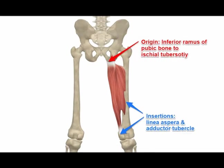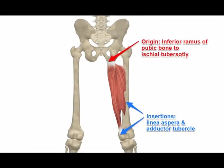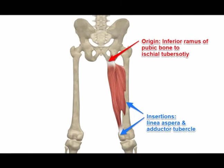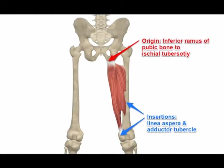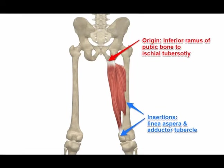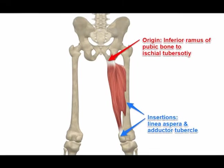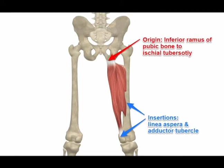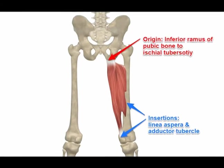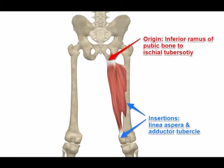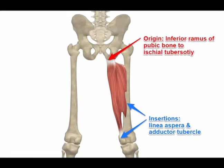The adductor magnus originates on the inferior pubic ramus, the ischial ramus, and the inferior lateral area of the ischial tuberosity. It inserts into the gluteal tuberosity of the femur, the medial lip of the linea aspera, the medial supracondylar ridge, and the adductor tubercle.